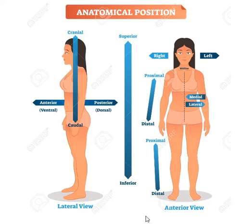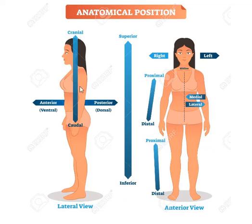Now let's cover superior and inferior. Superior refers to the top and inferior refers to the bottom — for example, the crown of the head is superior and the sole of the feet is inferior. It's similar to proximal and distal but used in different scenarios. Next are cranial and caudal. Cranial refers to the head at the top, and caudal — think of a tail — refers to the bottom or furthest from the head.